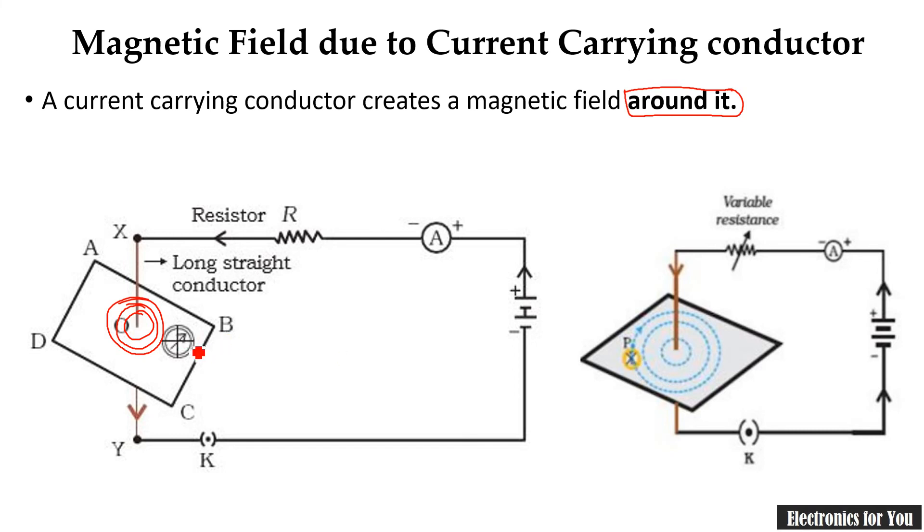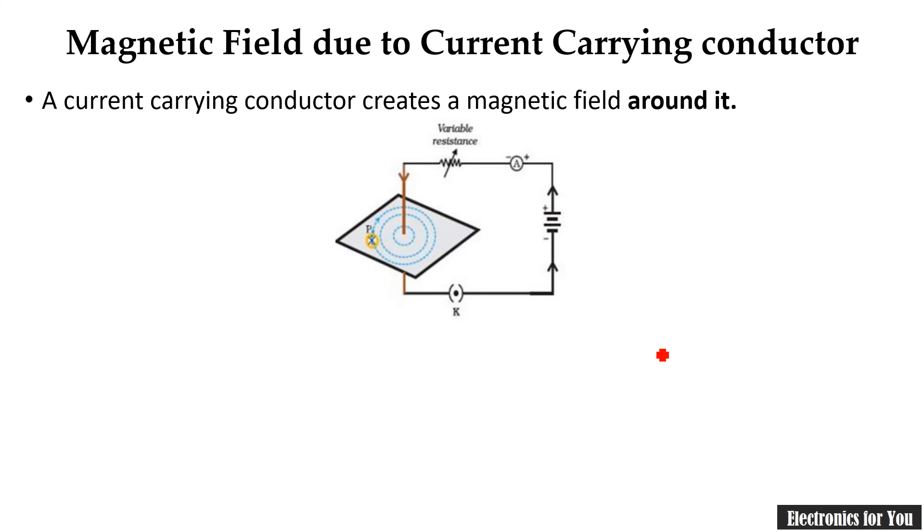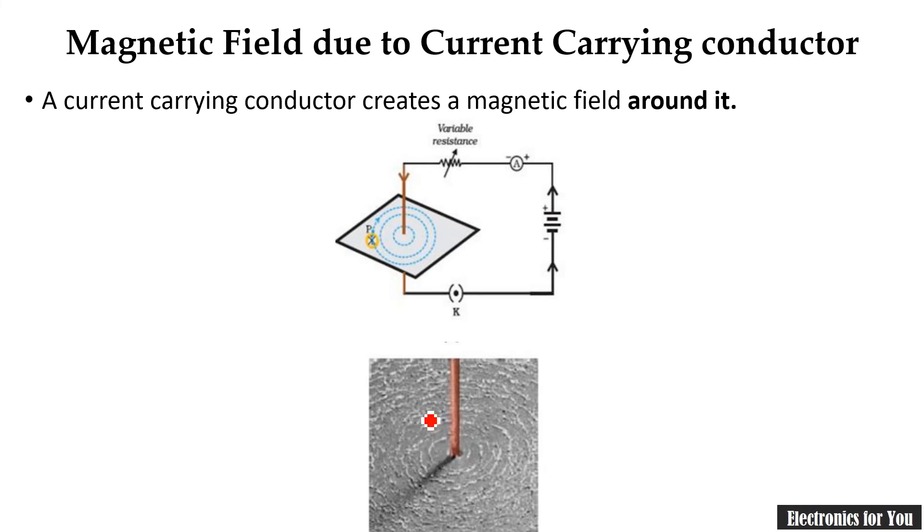Here the same experiment there and it is indicated that the magnetic lines of forces are generated around it. So this is the diagram here and this picture will look like exactly this. Here is the conductor, it is a current carrying conductor. If the current is passing through it, it will generate the magnetic field just like this.